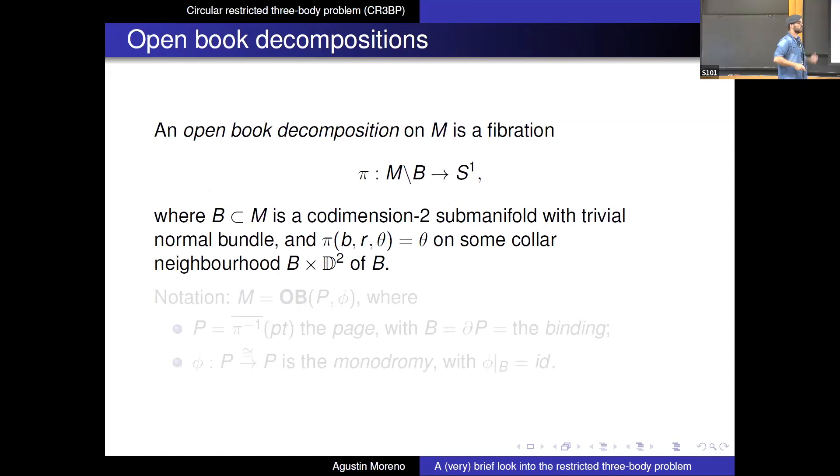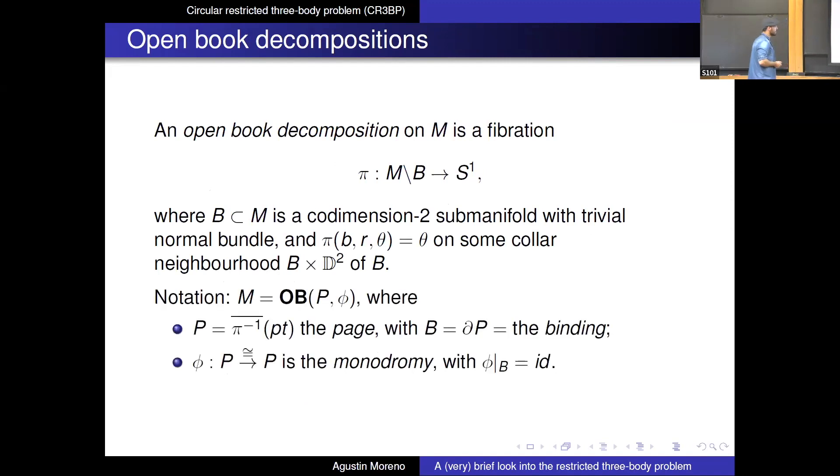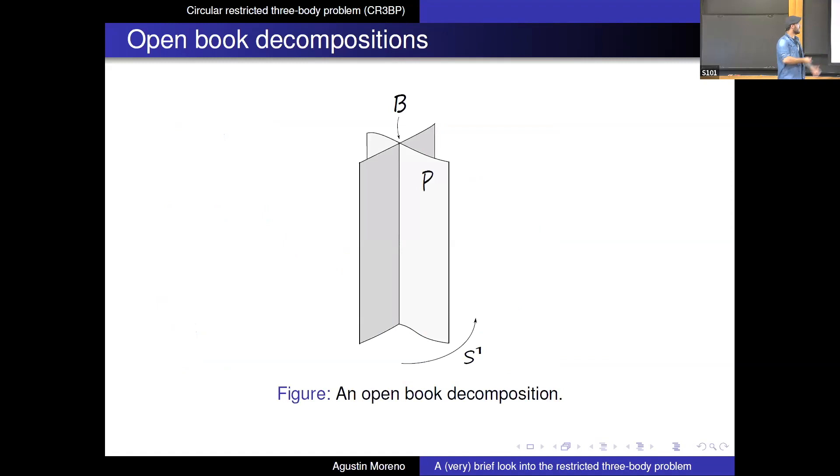So in order to generalize the situation to higher dimensions, I need to introduce a notion of a Poinque de composition, which was already also considered in the first stock. So in a Poinque de composition and a manifold M, it's just a vibration on the complement of some core dimension to sub-manifold B, which is a normal bundle. And I want that this vibration has a standard form on a color neighborhood of B, namely just project down to the angle coordinate or some choice of polar coordinates on the normal direction. So the notation that we usually use is M is just the open book associated to P and Phi. So P here is the page of the open book, which is the closure of the fiber, and B is the boundary of any page, which is called the binding of the open book. And Phi is just a monodroming, which is a dipheomorphism of P identity at the back. The picture to remember is this one. So I have a B, which is sort of dimension two, and then this looks like as if I took a book with binding as B, and I opened it up, and then I glued the front lid to the back lid because this is a picture. Okay, so we have a circle family of pages opened up.